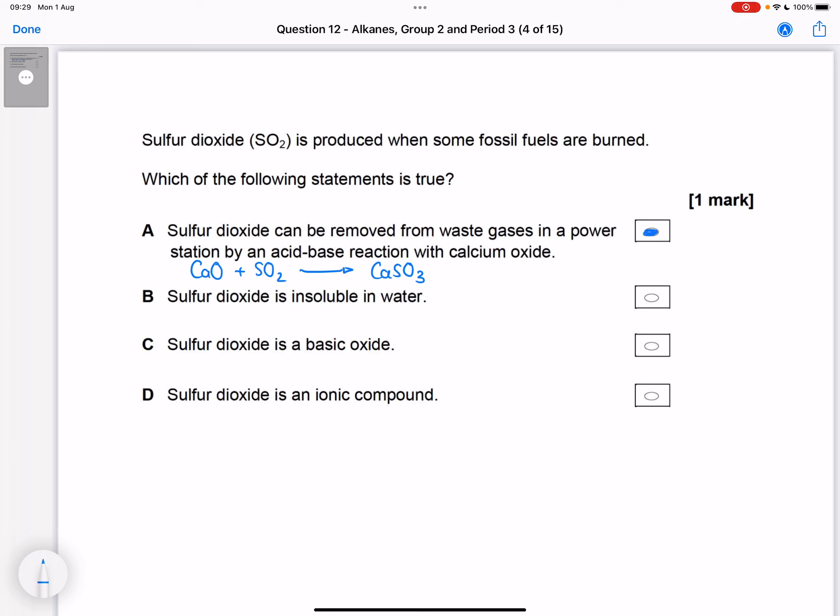Now if you weren't 100% sure about that fact because you hadn't memorized it, you could look down the others and see if you knew whether the following statements were incorrect. Sulfur dioxide is insoluble in water - well that's incorrect. They're trying to get you to think about that one because silicon dioxide is insoluble in water because it's a macromolecule. Sulfur dioxide dissolves in water to make sulfurous acid.